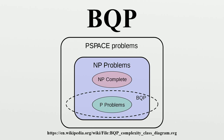Similarly to other bounded error probabilistic classes, the choice of one third in the definition is arbitrary. We can run the algorithm a constant number of times and take a majority vote to achieve any desired probability of correctness less than one. Using the Chernoff bound,